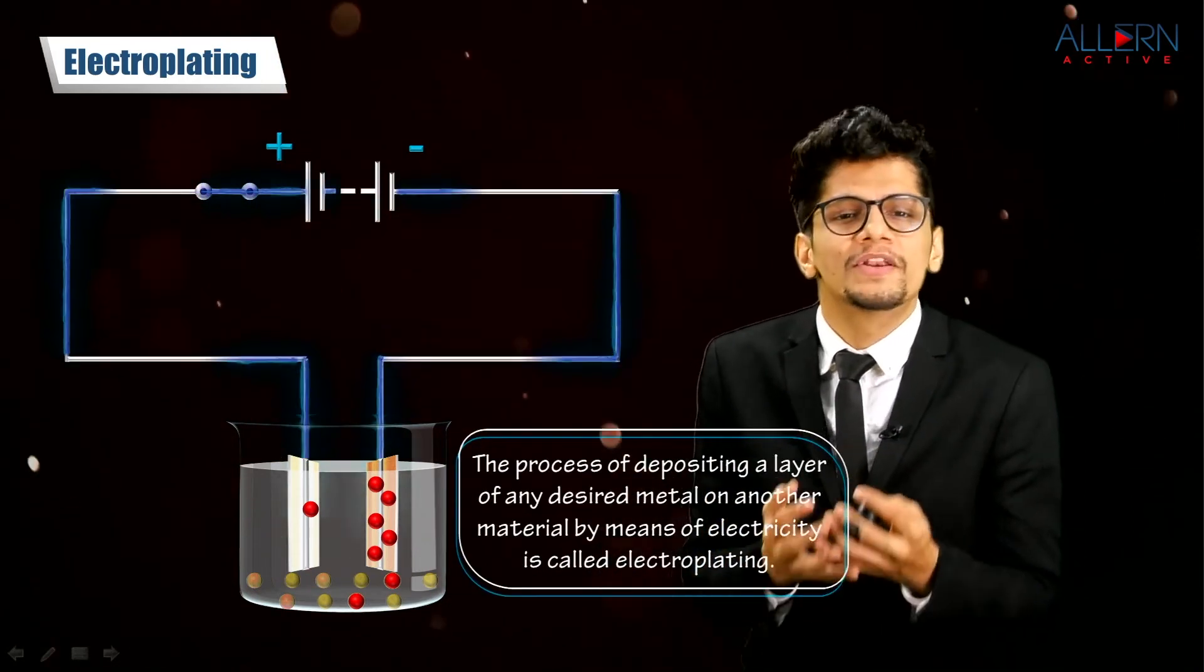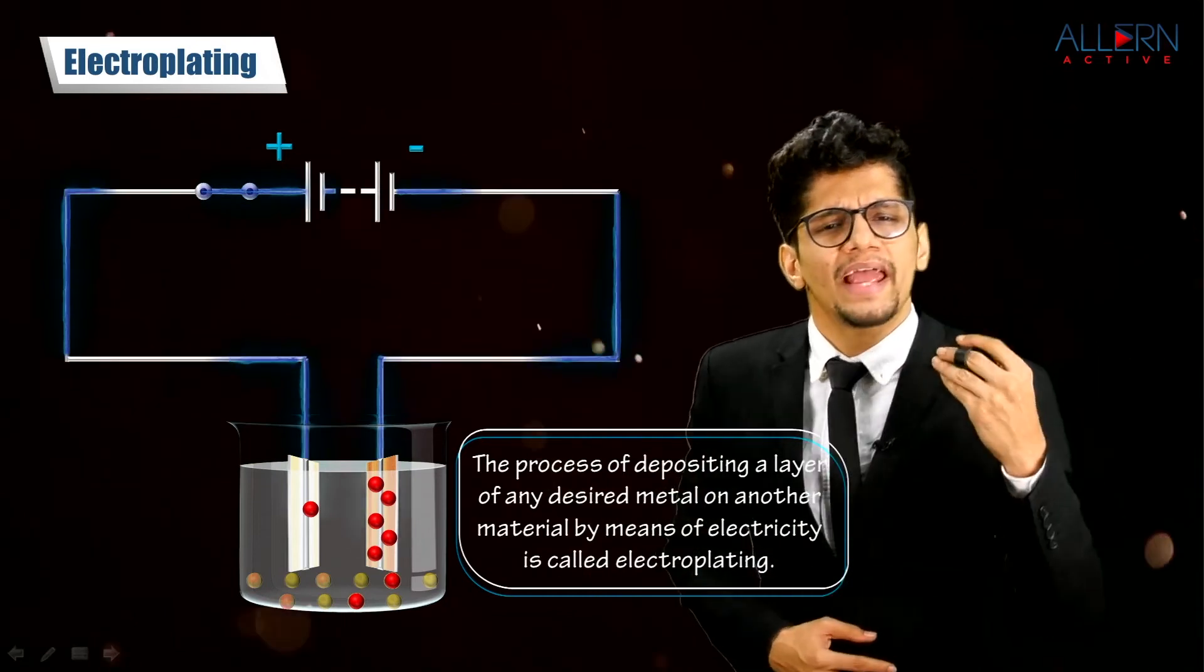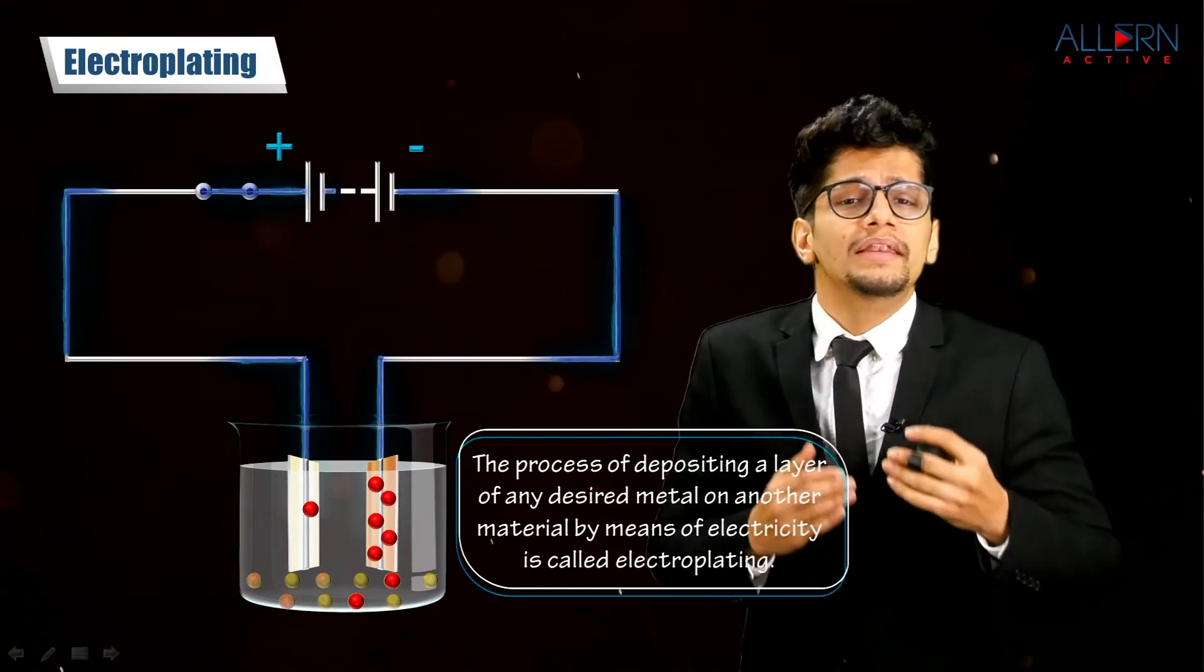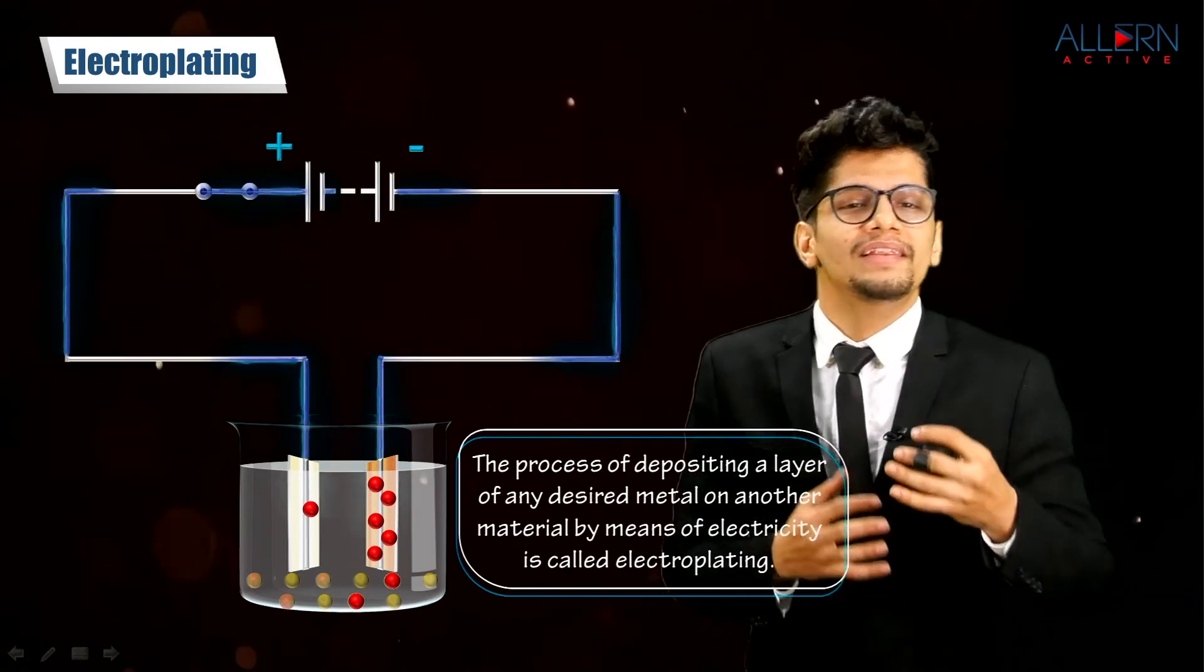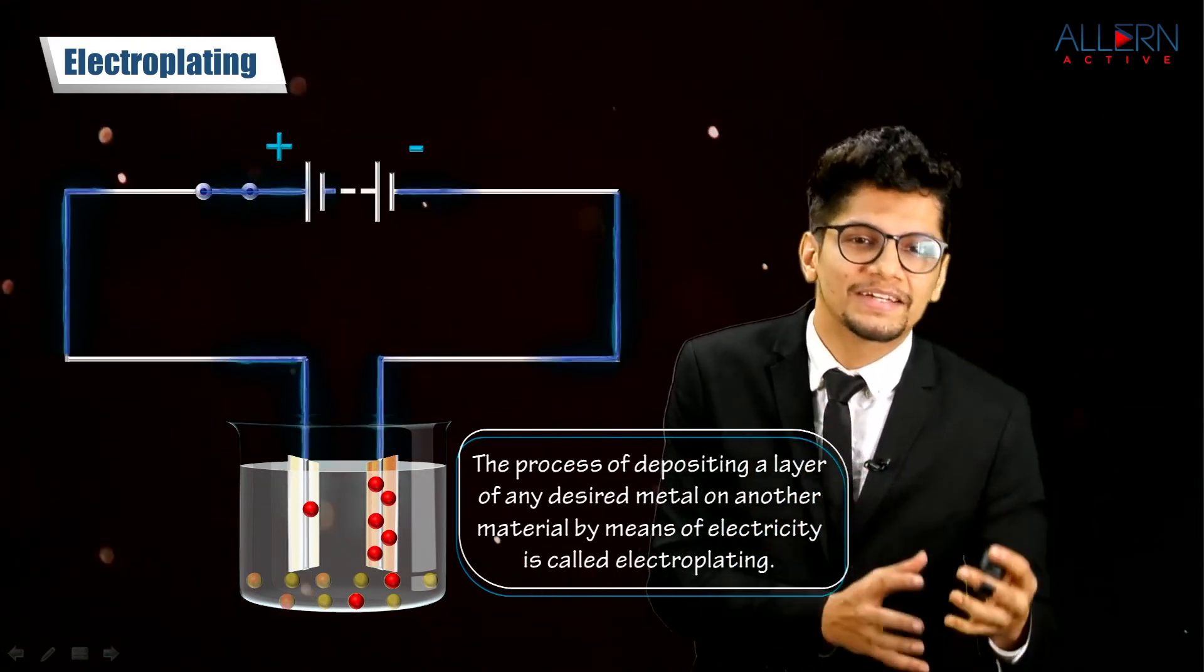This process of depositing a layer of any desired metal on another material by means of electricity is called electroplating.